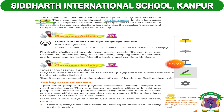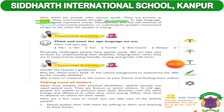We have discussed three types of disabilities. Now, in sign language, hand signals represent words. For example, if you are hungry — aapko bhook lagti hai — you point towards your stomach and then towards your mouth. That hand signal means you are hungry.